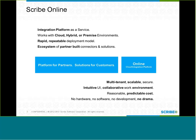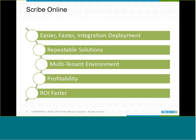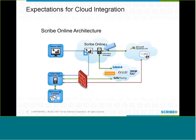Scribe also has a very strong connector development kit that allows us, partners, and users to build their own connections to their own applications. Scribe Online is a cloud-based service, purchased on a usage basis based on how much data comes through the system — very low cost to start, actually free to start until you put data through it. It works with cloud-based systems and has an agent technology. It is a non-developer system focused on power users who understand data models.